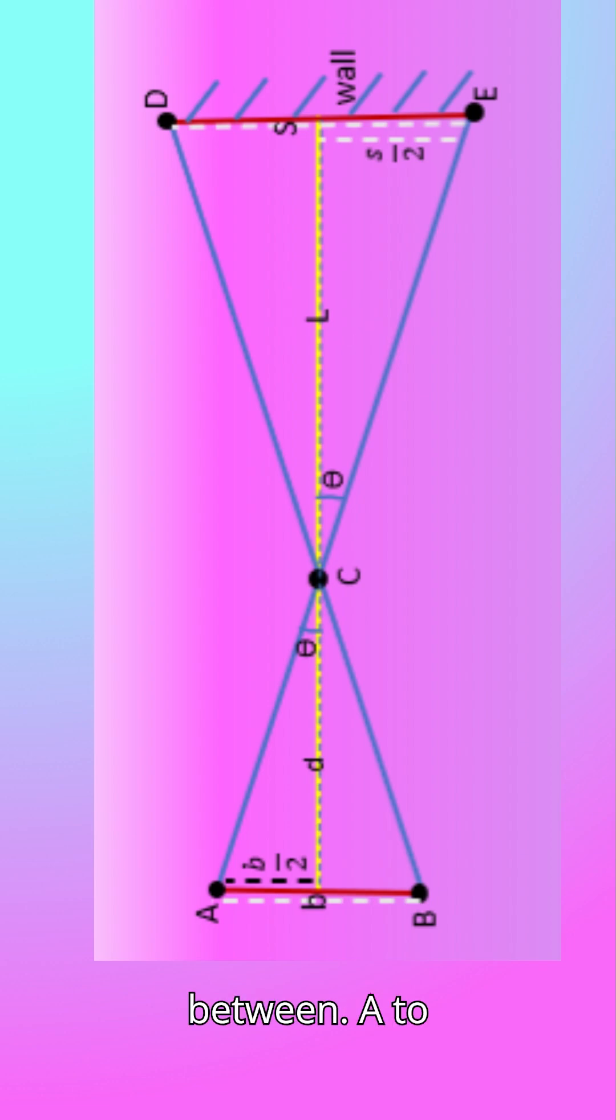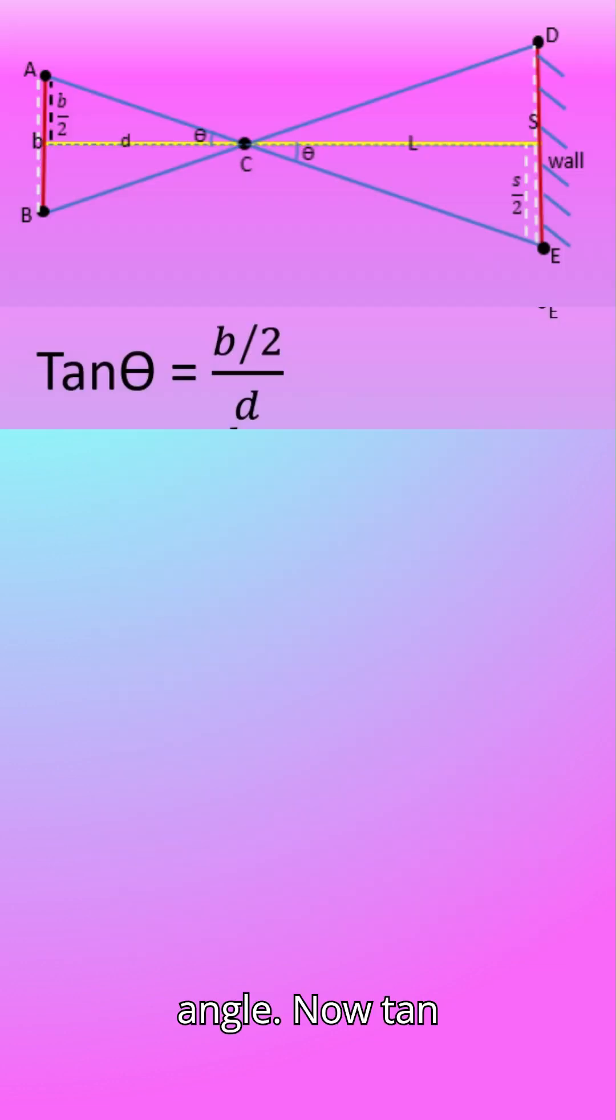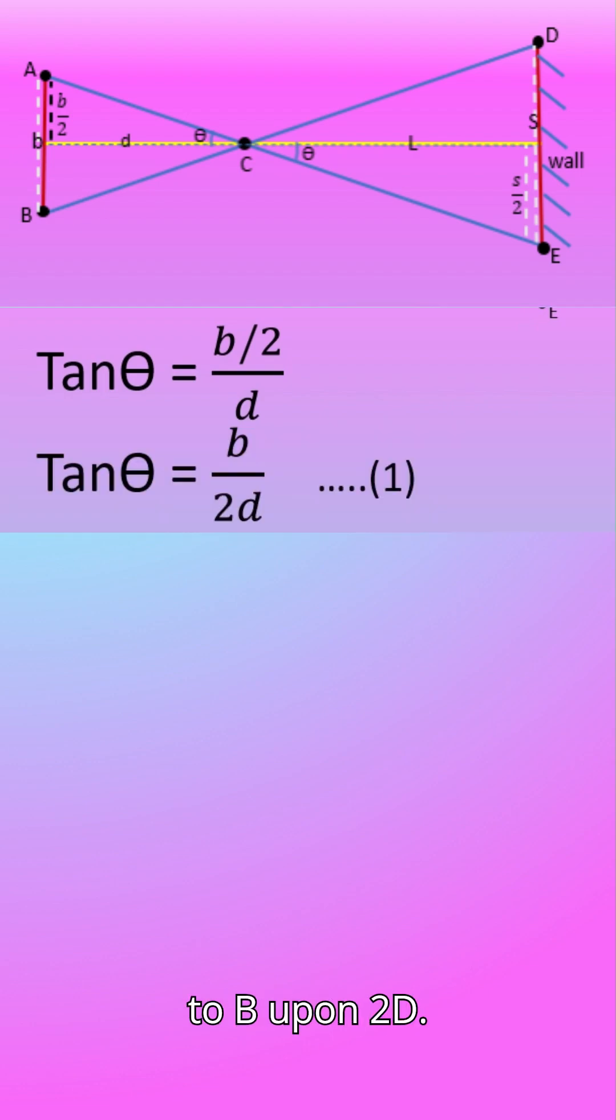The distance between A to midpoint on AB is B upon 2. Theta is the parallax angle. Now tan theta equals B upon 2 divided by D. That is equal to B upon 2D. This is equation 1.